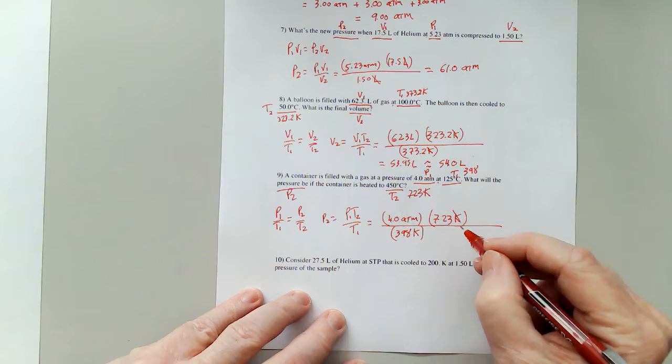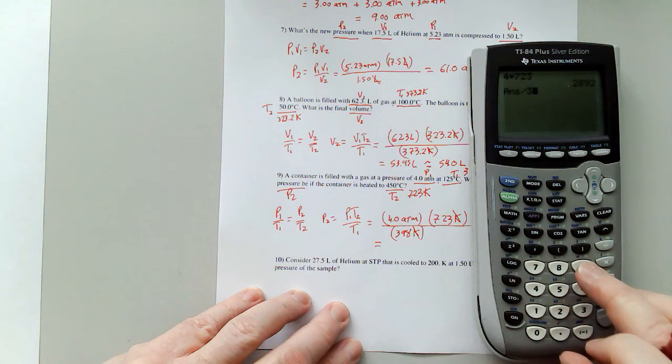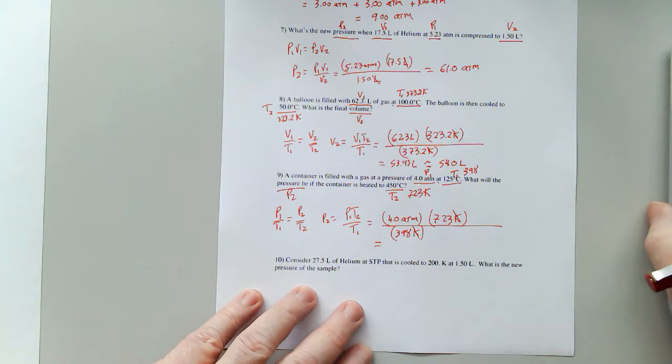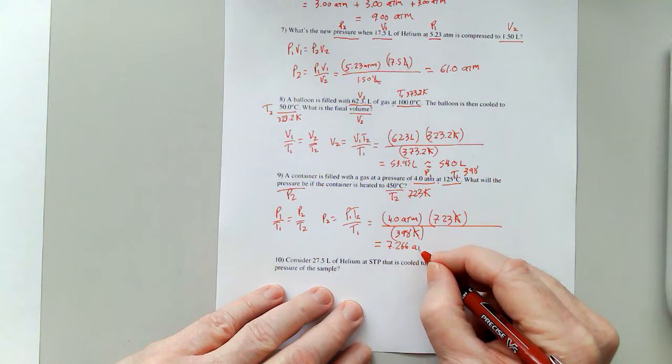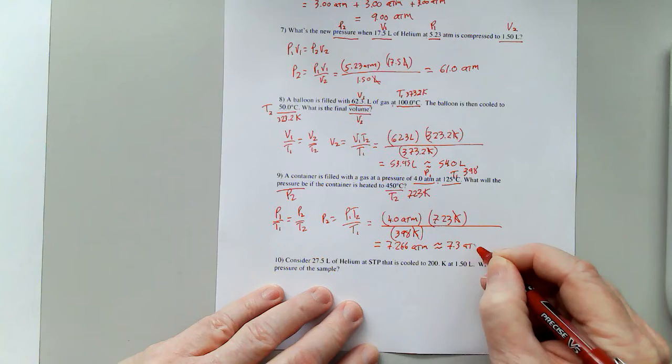So 4 times 723 equals divided by 398. I'm getting 7.266, so that is going to be rounded off to 2 sig figs, 7.3 atmospheres.